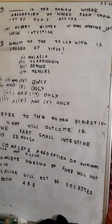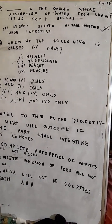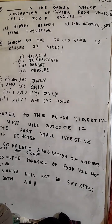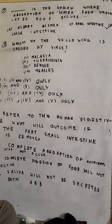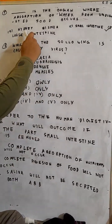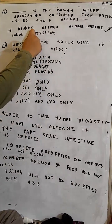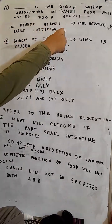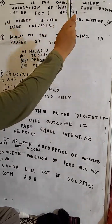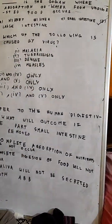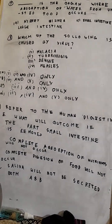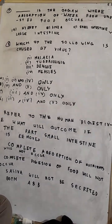Dash is the organ where absorption of water from undigested food occurs. The options are: A, kidney; B, liver; C, small intestine; D, large intestine. The correct option is option D, large intestine, as the small intestine gives undigested food to the large intestine.